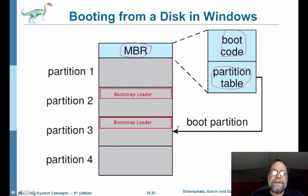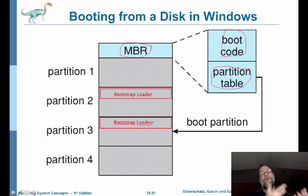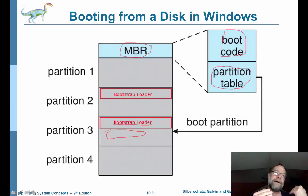When you go to whichever partition you've set up to boot from, stored in the low-level sectors of that partition will be another program called the bootstrap loader. That program is loaded into RAM, executed, and it then goes and pulls the actual operating system — the kernel code — off the same partition and starts that running. It's actually a fairly complicated process to get the boot going.